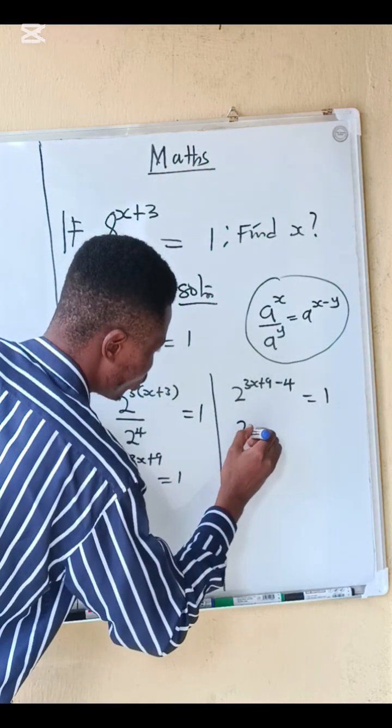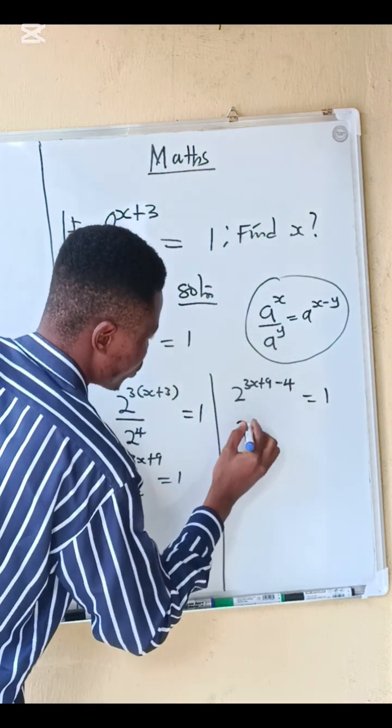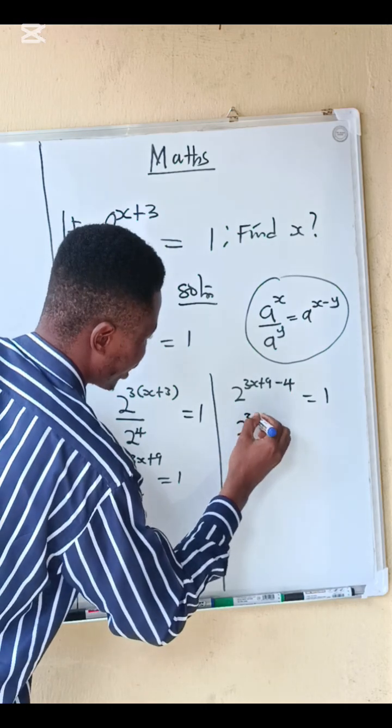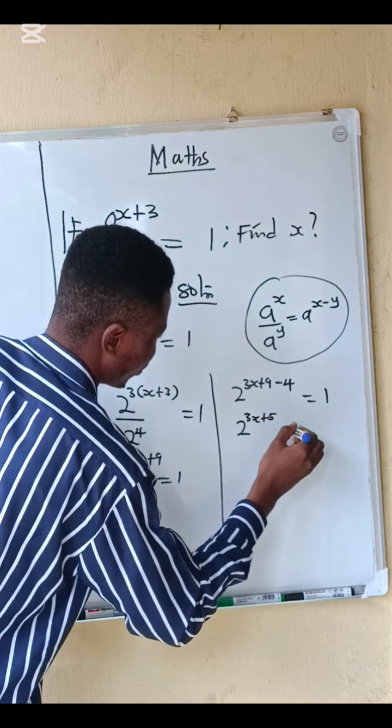9 minus 4 gives you 5, so we have 2 power 3x plus 5 equals to 1.